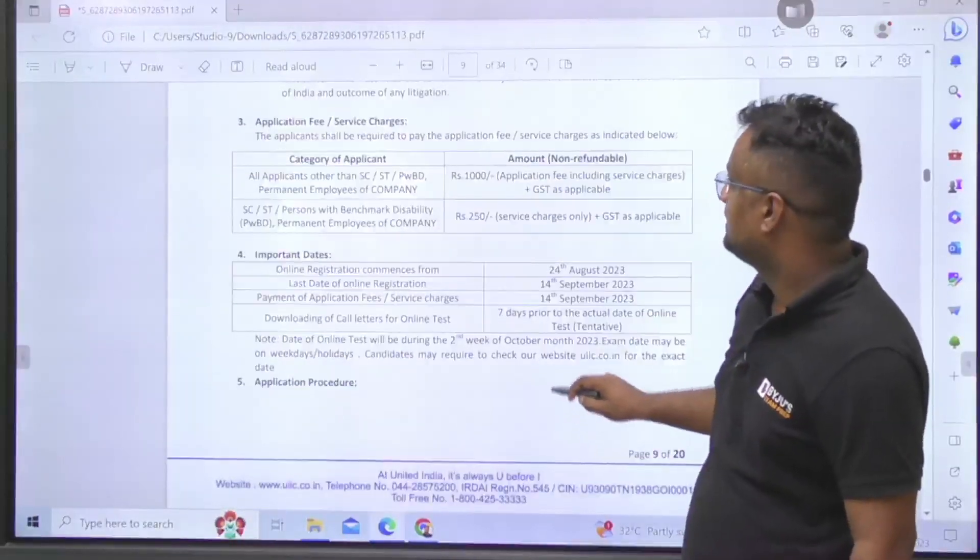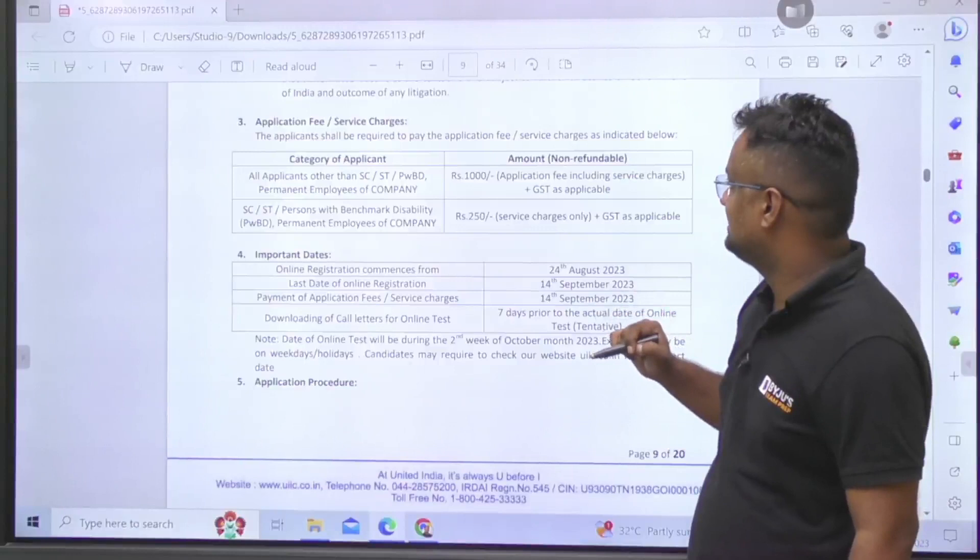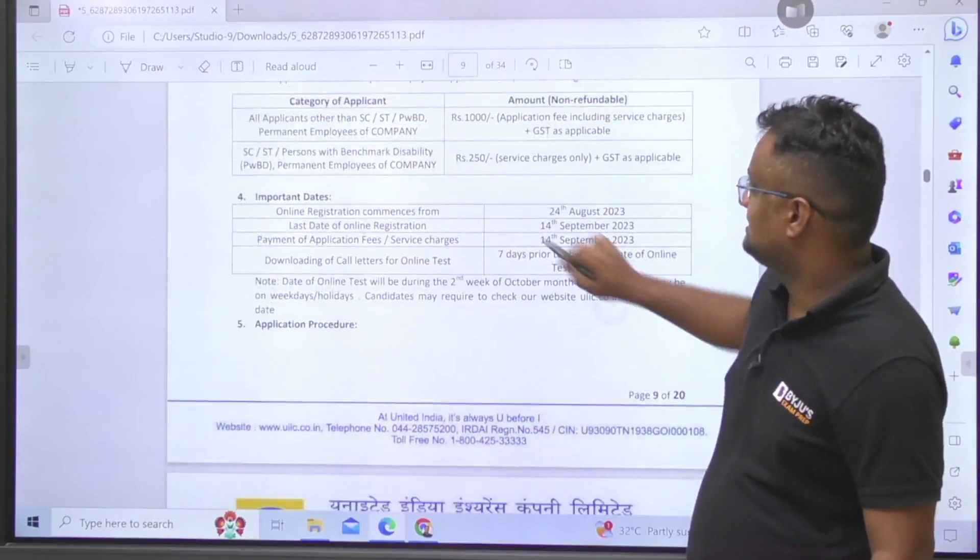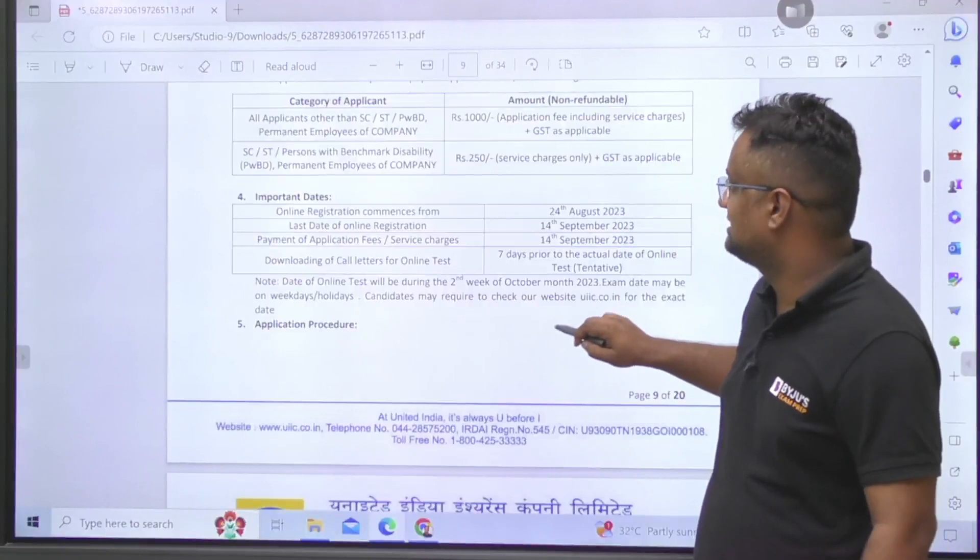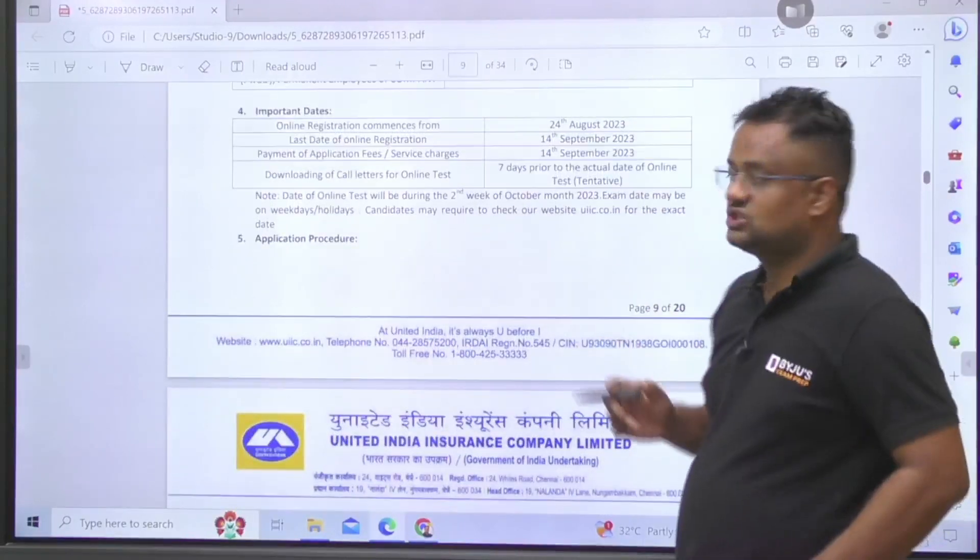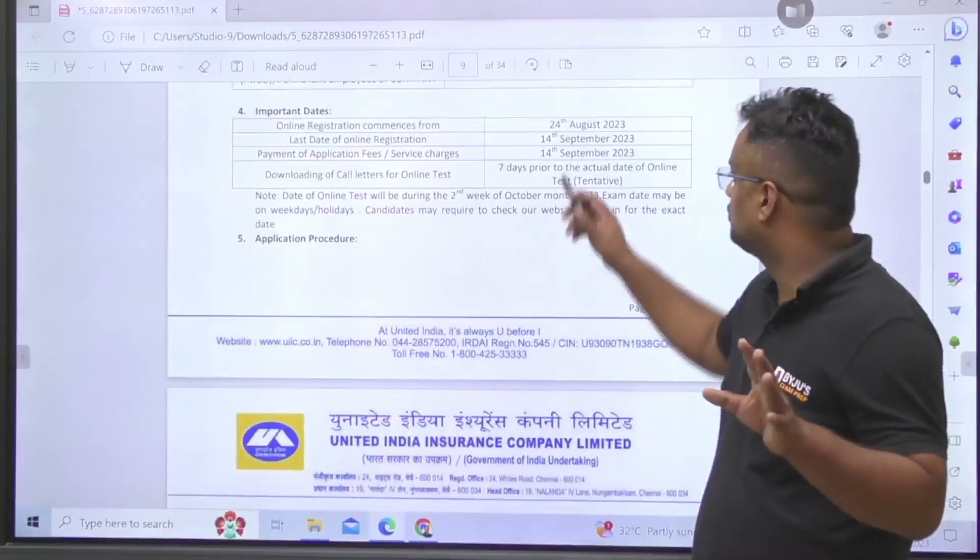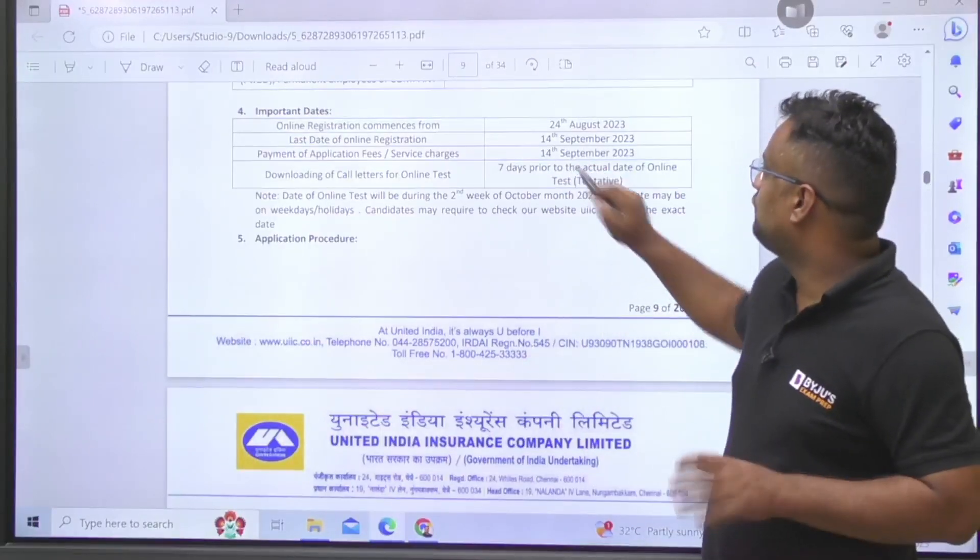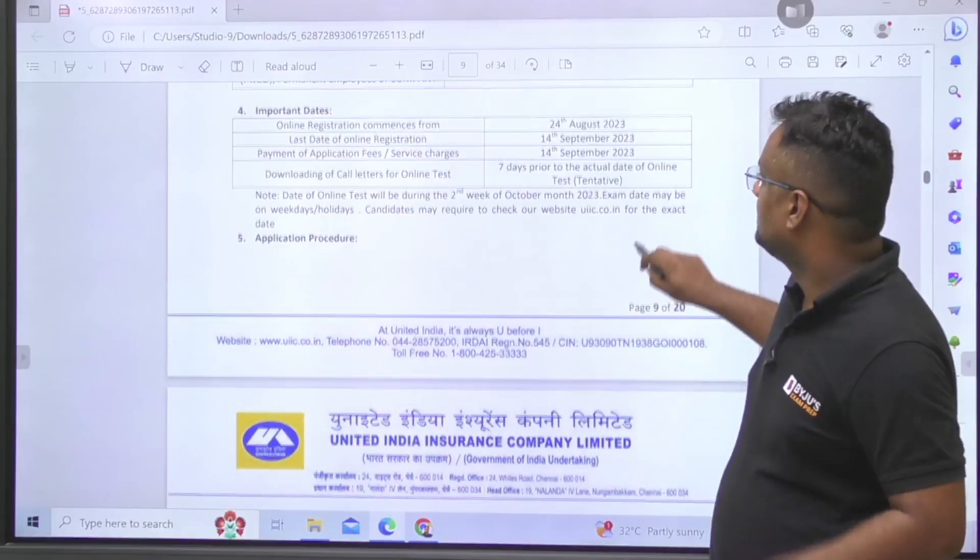Moving forward about the pattern of examination, the fees. Other than SC/ST, the fee is 1000 plus GST, and SC/ST and persons with disability is 250. Registration is started from 24th August, that is today, and up to 14th September you can fill the form.